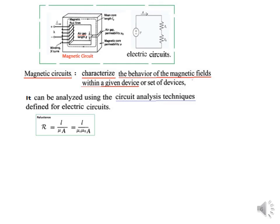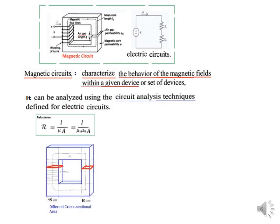We study magnetic circuits because we can use circuit analysis techniques to analyze them. One parameter to consider is the area of cross section. In this circuit, the width on one side is 15 cm whereas on the other it is 10 cm, with the same depth of 10 cm. So the area of cross section differs between arms. The areas on three sides are the same but different on the right-hand arm, and therefore we have two different reluctances corresponding to the two different cross-sectional areas.